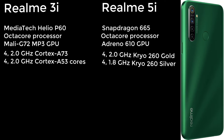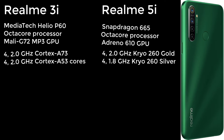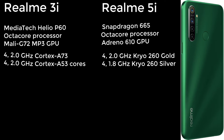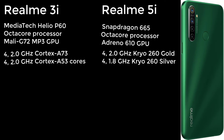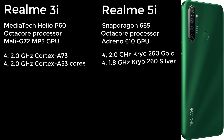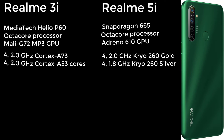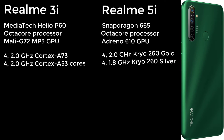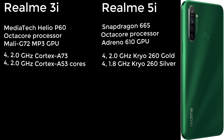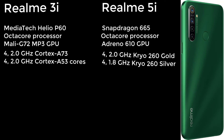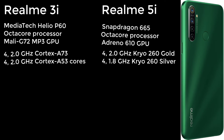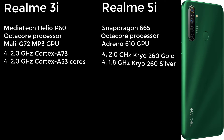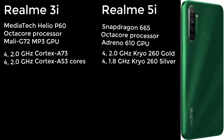The Helio P60 has 4 cores at 2.0 GHz Cortex-A73 and 4 cores at 2.0 GHz Cortex-A53, whereas the Snapdragon 665 has 4 Kryo 260 Gold cores at 2.0 GHz and 4 Kryo 260 Silver cores at 1.8 GHz.